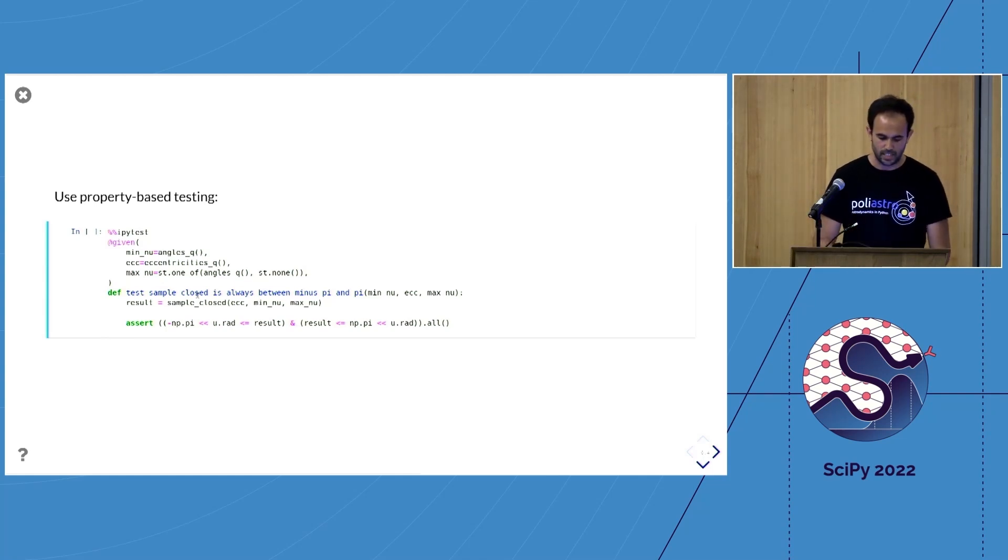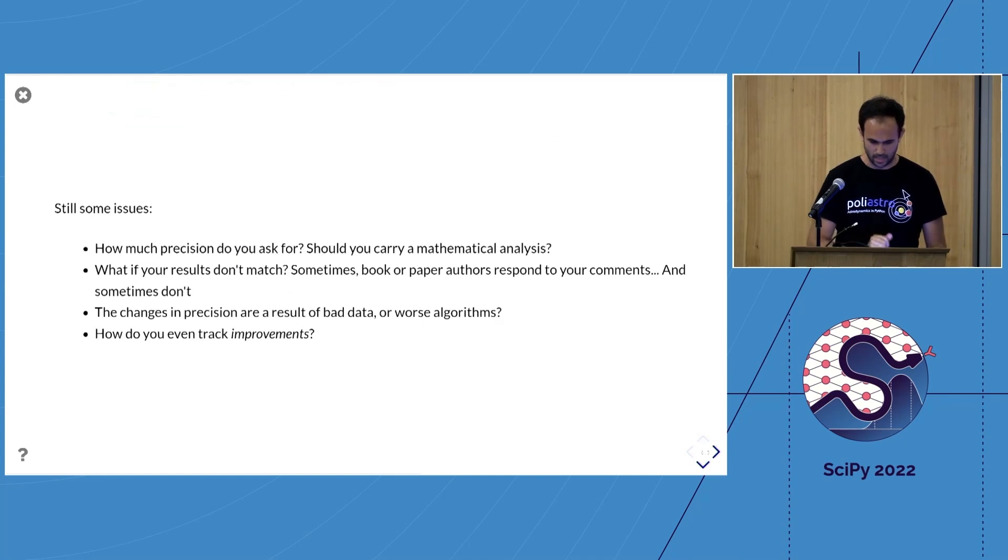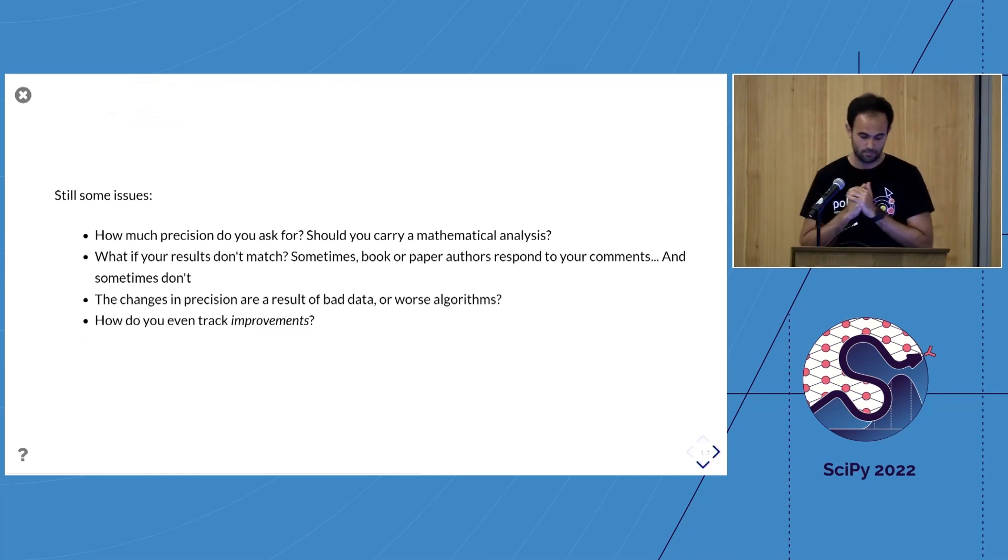Another thing you can do is use property-based testing. I totally recommend you check it out. Basically, what we're doing here is saying, 'Given this function, given any eccentricity—anything from 0 to 1—and any value of the true anomaly, I want to check that this always holds, that the result is always between minus pi and pi.' Hypothesis automatically generates test cases for you and tries to find tricky cases that make the test fail, like what happens with infinity. It's like your automated QA engineer, and totally recommended.